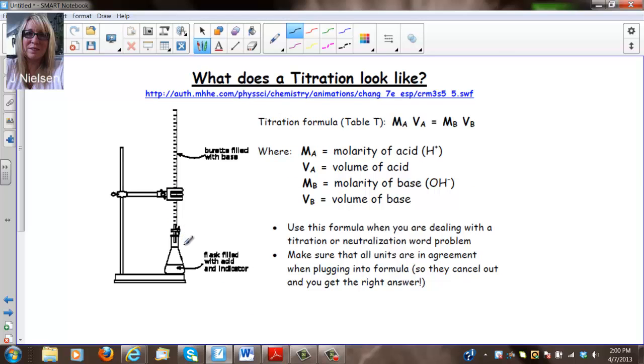So what does titration look like? Well, you have a titration formula in Table T that says MAVA equals MBVB, where the molarity of the acid times the volume of the acid equals the molarity of the base times the volume of the base. Your volume does not have to have specific units. It can just be milliliters or liters. But we can't mix units. We can't have one in milliliters and one in liters. Just make sure that your units are the same. We use the formula when you're dealing with a titration or neutralization word problem.